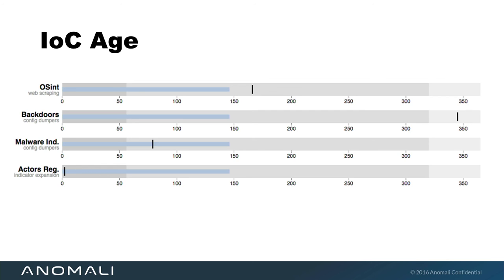If we just look at the backdoors feed — Kev the Hermit's config dumping — you're all the way out at about 340 days. If we look at the malware indicators feed, which includes a lot of crimeware like H1N1, Chanitor, Andromeda, and so forth, that brings us down to 75 days — now we're getting somewhere and starting to lower that dwell time. But then the indicator expansion-based feeds using actors' registrant information — what we found was we're actually able to get up on new indicators in two days. As far as I've been able to tell, that's the quickest methodology you can use to capture new IOCs and get as close to the boom in the intrusion lifecycle.